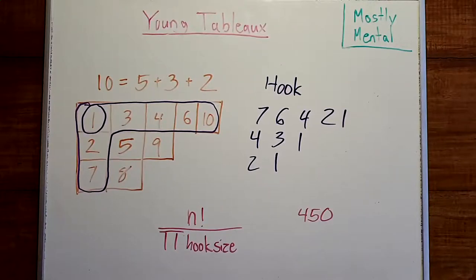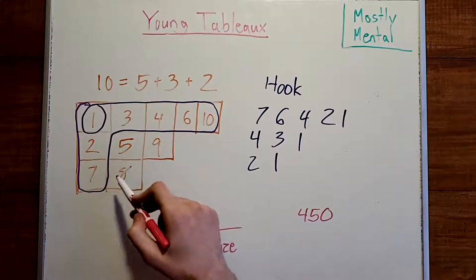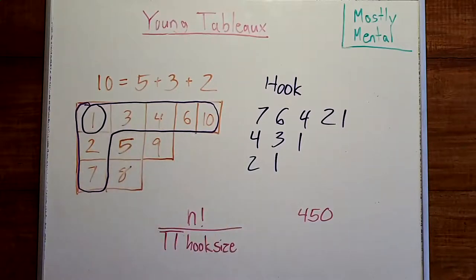This turns out to be the right answer, but there's a problem with this argument. The hooks aren't independent. They overlap in all sorts of complicated ways. And so we can't just blindly multiply all the probabilities together. Not to worry, though.